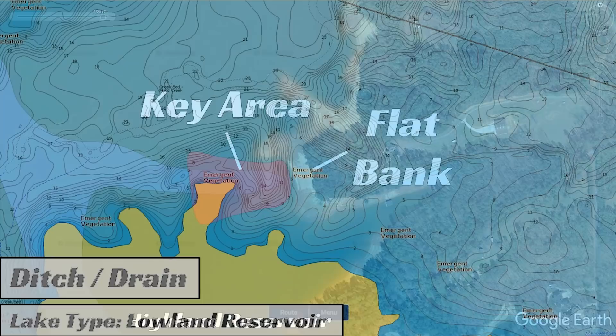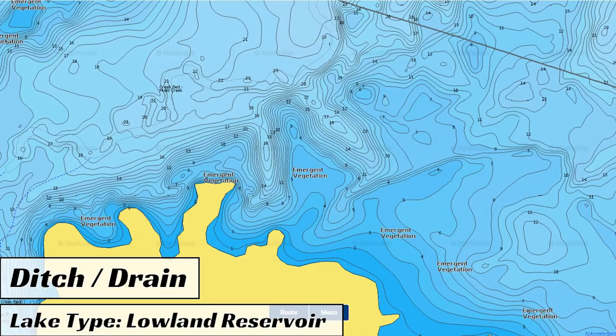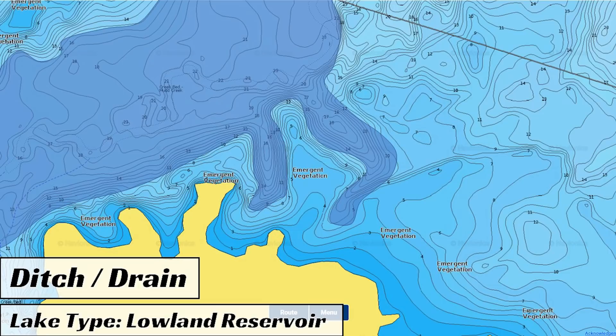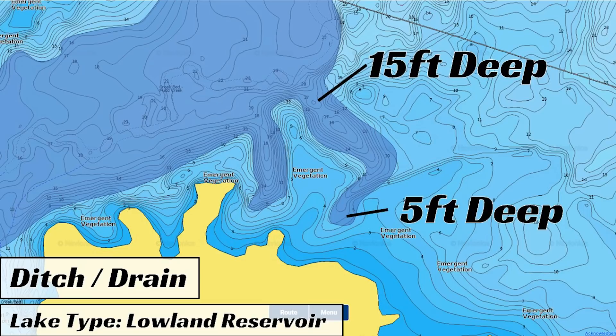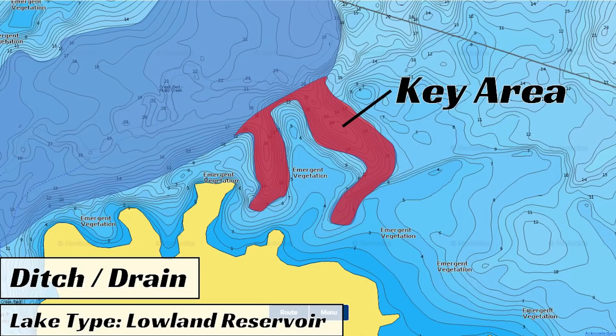Ditches and drains will also hold winter bass on lowland reservoirs that are shallower and dirtier. A lot of times these ditches may be no deeper than five to six feet of water and then rise up to two or three feet on the edge, but still hold fish in 40 to 45 degree water temperatures. Here's an example of ditches on a lowland reservoir — the center of these ditches are in 15 to 18 feet, but near the end they're as shallow as three or four feet. The water clarity on your lake is going to be the biggest determining factor in how deep the bass will set up. With two to three feet of visibility, they may set up in 15 feet, but with only six inches to a foot of visibility, those bass may set up in as shallow as five feet.